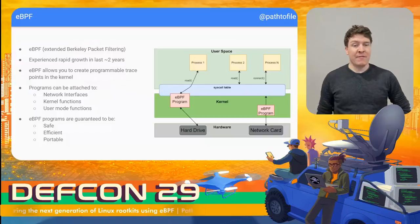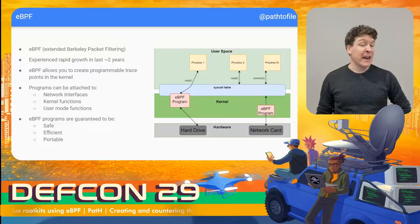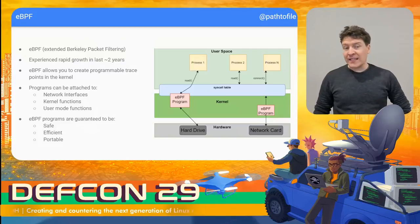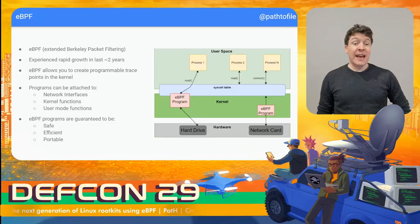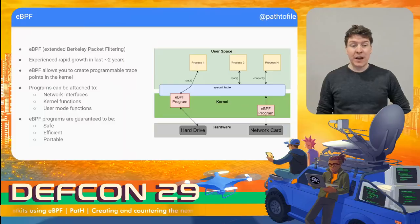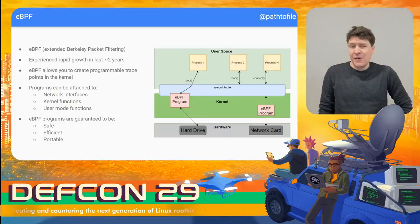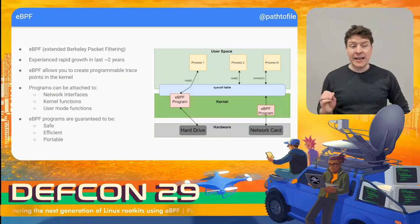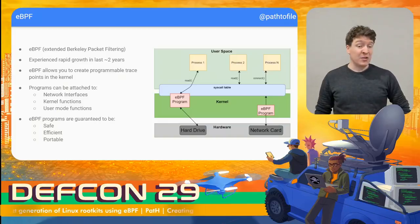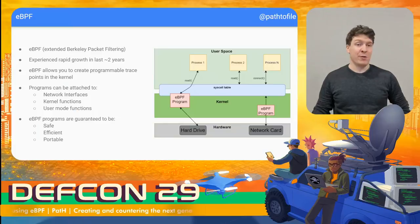What is eBPF? eBPF stands for Extended Berkeley Packet Filtering, but it has grown so much from the original BPF, particularly in the last two years, that any comparison to this classic version isn't really relevant today. It's a system within the Linux kernel that allows you to create programmable trace points known as eBPF programs. These programs can be attached to network interfaces to observe network traffic, or the entry or exit points of kernel functions including syscalls, and can even be attached to user space programs and functions. If this sounds like the same places as a kernel rootkit, you'd be correct — but unlike a kernel rootkit, eBPF programs are guaranteed to be safe from crashing the system, and they're even portable across kernel versions and system architectures.